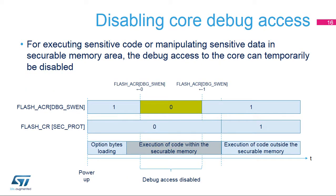Taking control of the Cortex-M0+ by using invasive debug can be temporarily disabled by programming the DBG_SWEN control bit appropriately. For instance, the secure boot can decide to clear this bit before performing authentication and decryption, and then set this bit to 1 to re-enable invasive debug once the authentication is successful.